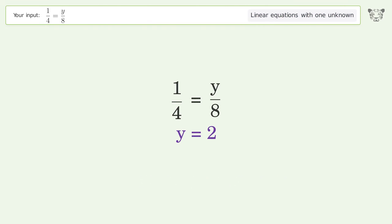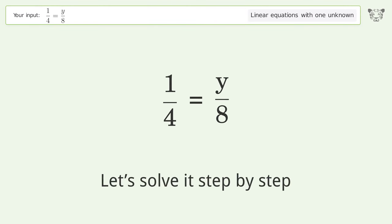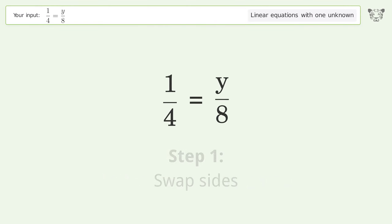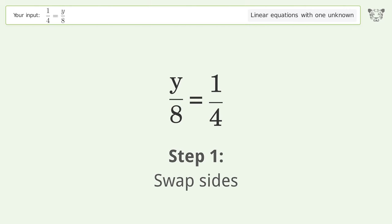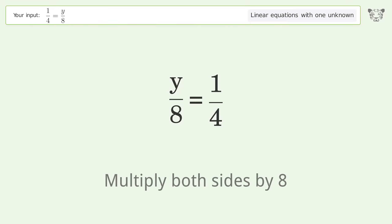You asked Tiger to solve this — it deals with linear equations with one unknown. The final result is y equals 2. Let's solve it step by step. First, swap sides.